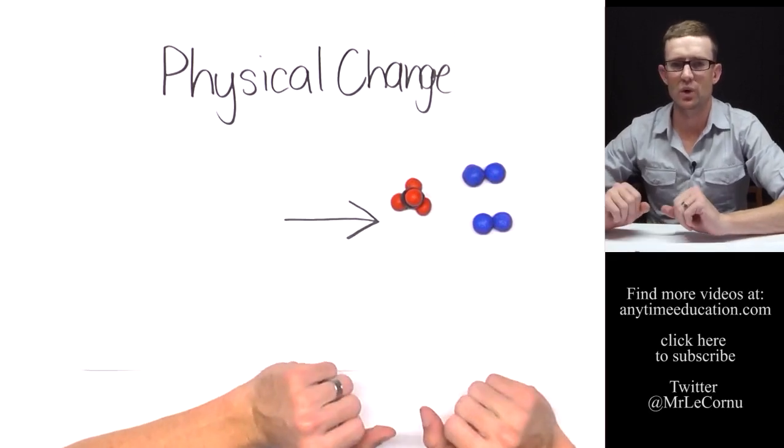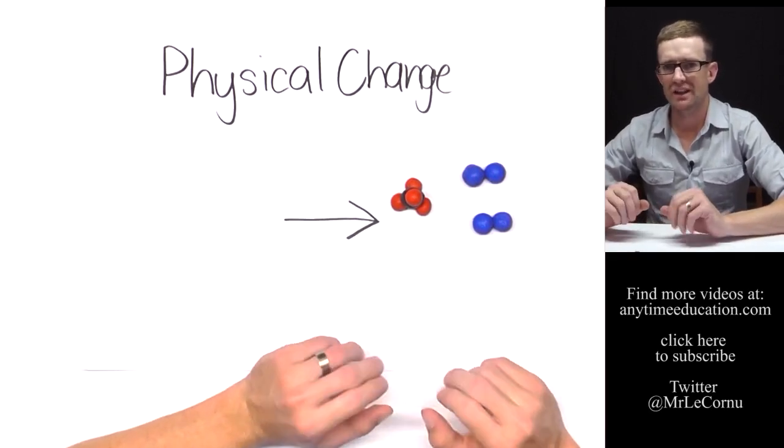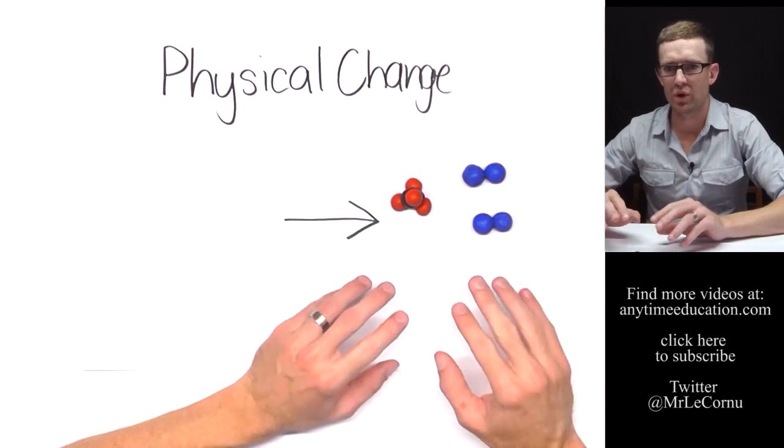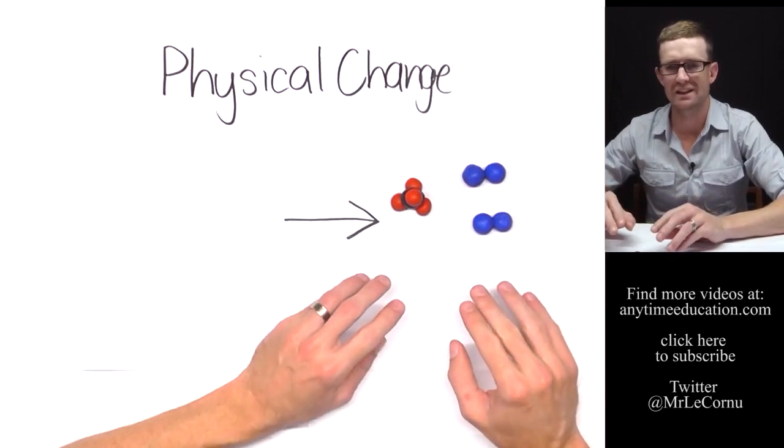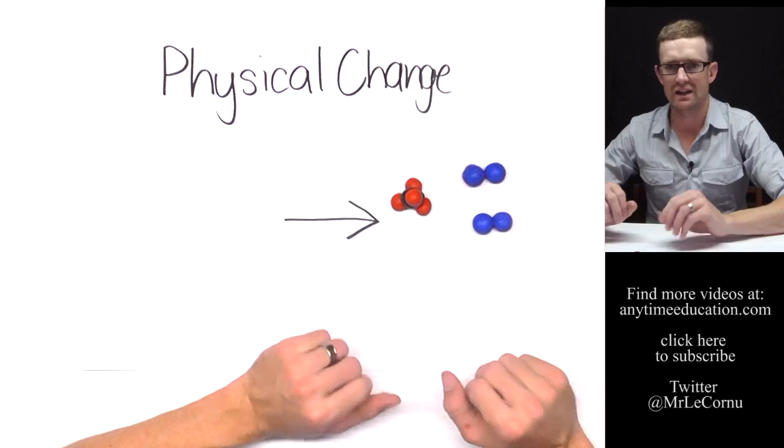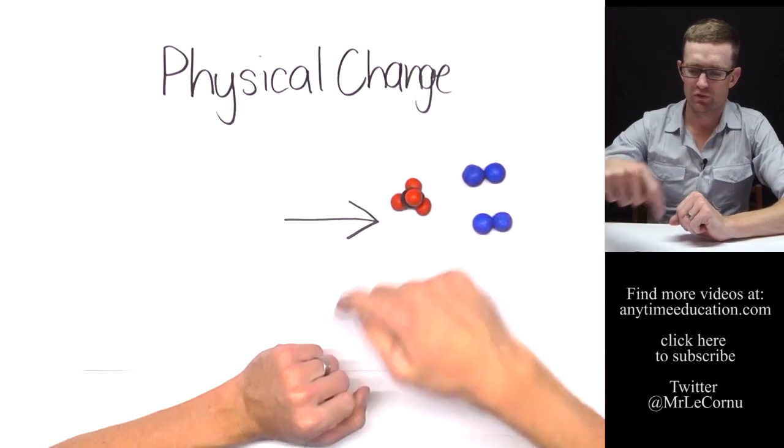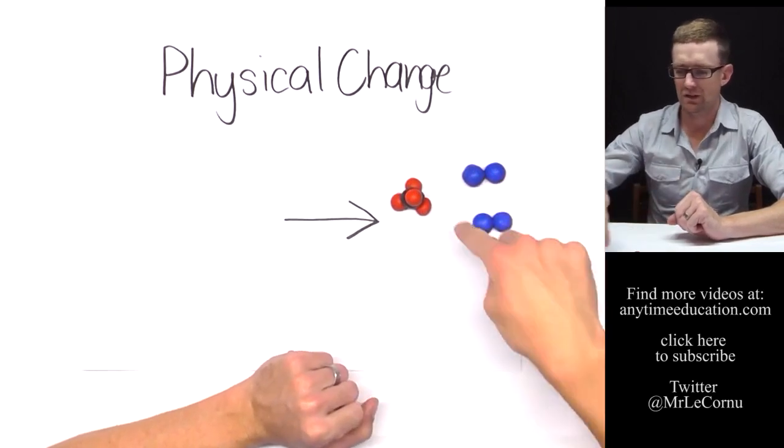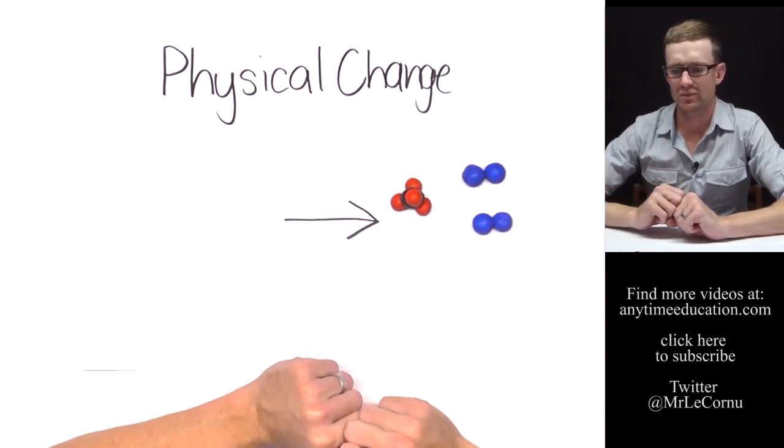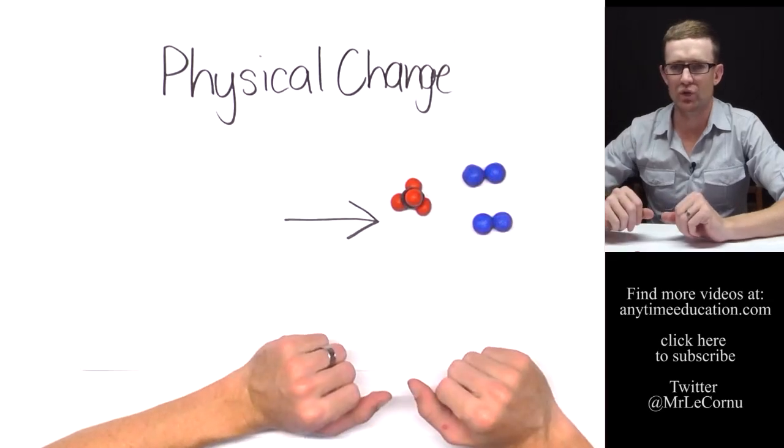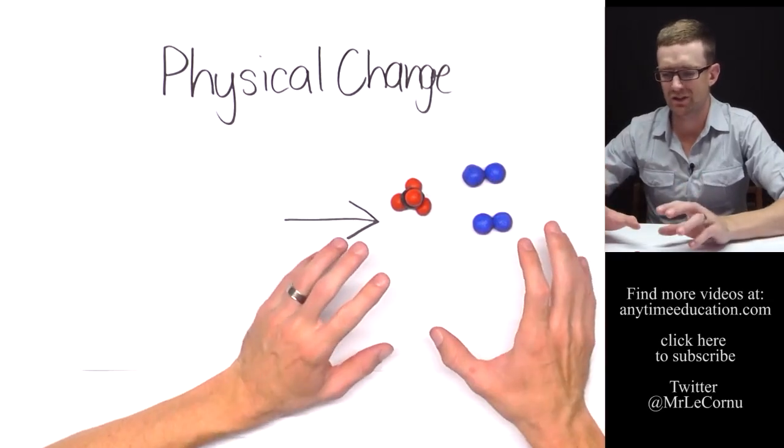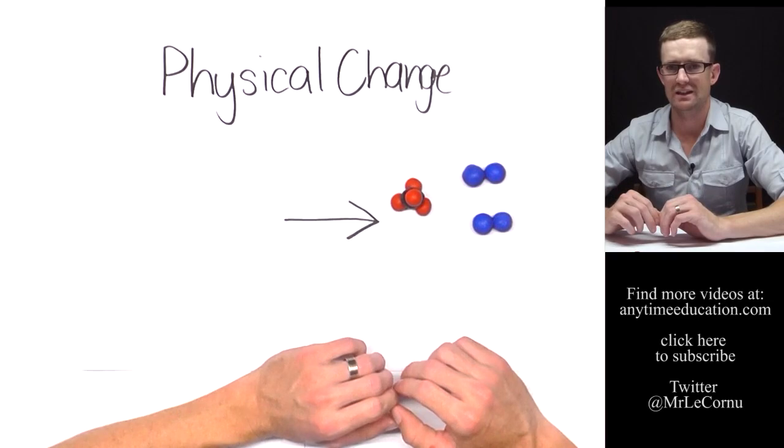The substance is just going to appear different, but it's not going to have any different properties. The properties will be exactly the same because it's still exactly the same substance. We still have one black atom, four red atoms, and four blue atoms. The molecules that they form are the same, and so the substance is going to be exactly the same. It might look different, but it's made of the same molecules.